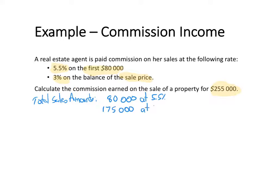That balance is at 3%. We can check that $80,000 plus $175,000 adds up to $255,000. So now that we've allocated the sales amounts into the correct percentage allocations, we can go ahead and calculate the commission.